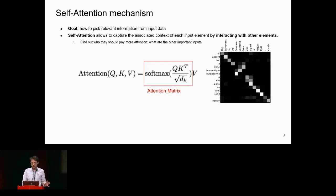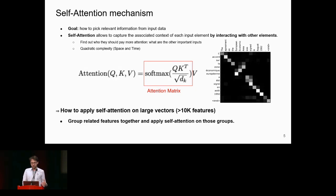The main problem of the attention mechanism is its quadratic complexity in both space and time. As omics data are highly dimensional, we cannot apply this mechanism directly on the omics profile. The idea was to group related features together and then apply the self-attention mechanism on those groups.